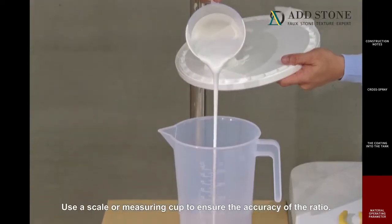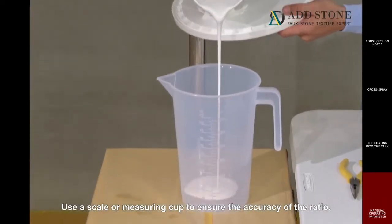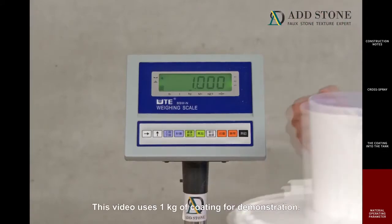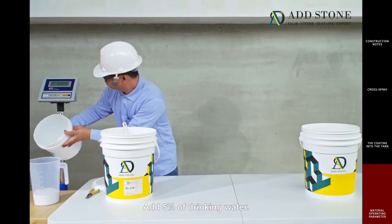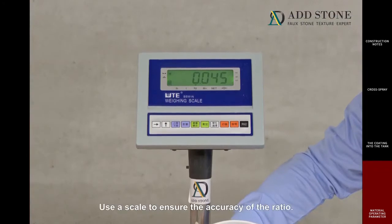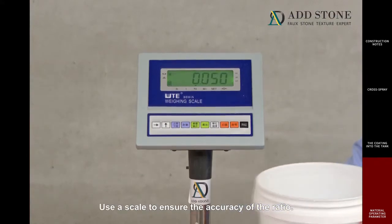Add water based on the suggested ratio. Use a scale or measuring cup to ensure the accuracy of the ratio. This video uses one kilogram of coating for demonstration. Add 5% of drinking water. Use a scale to ensure the accuracy of the ratio.